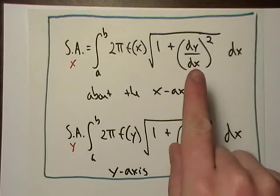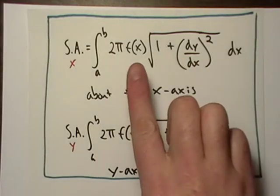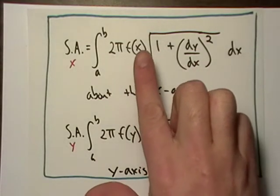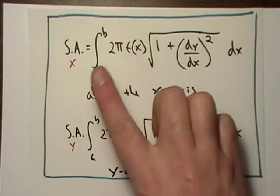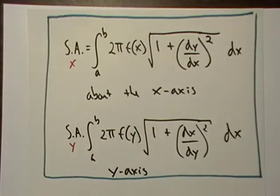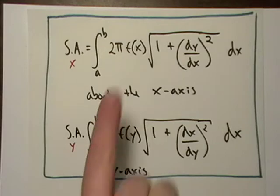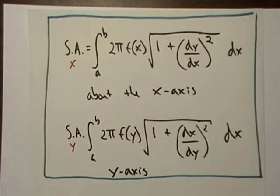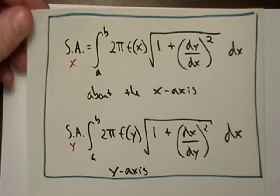It's basically the same as arc length, length of a curve, except you threw this f(x) in here and the 2π in front of it. Depending on what axis you're revolving this thing around, they kind of switch around. I'm not really going to talk about it anymore. Let's just do some examples.